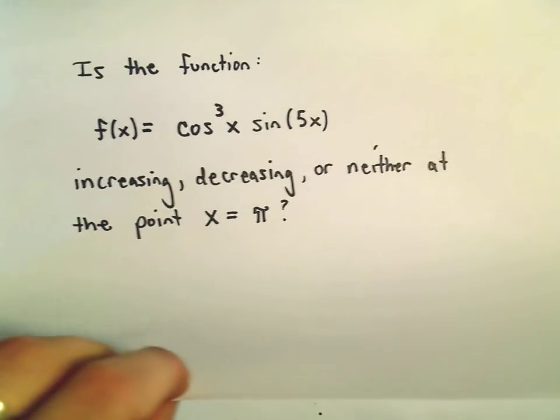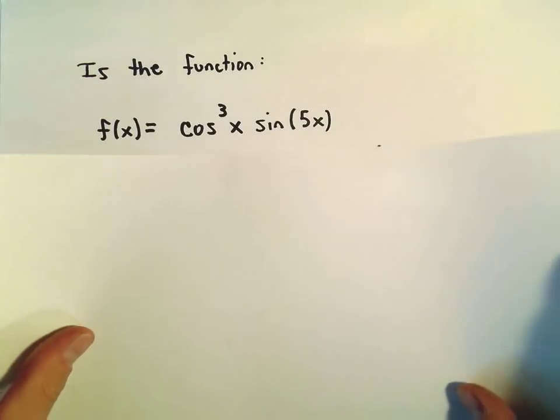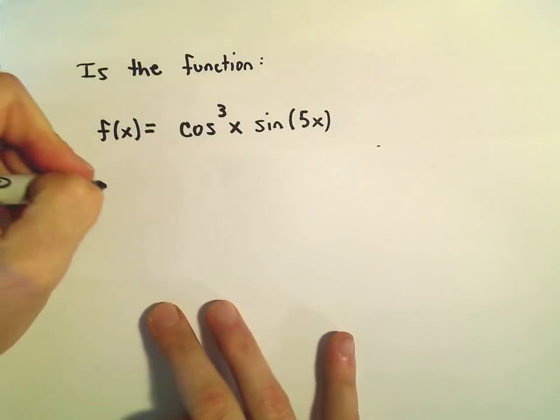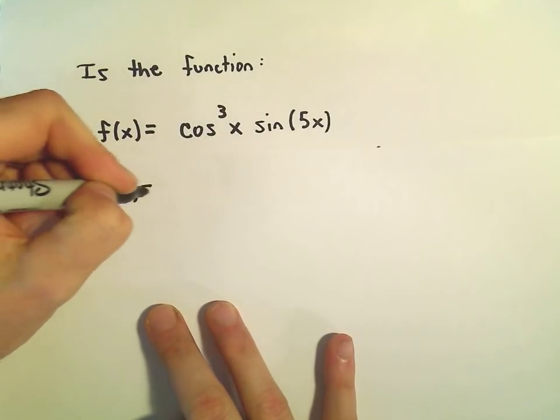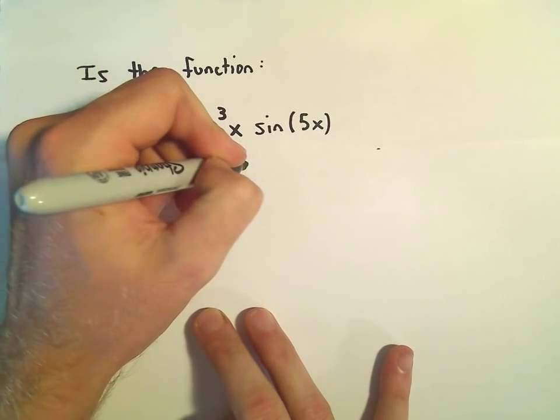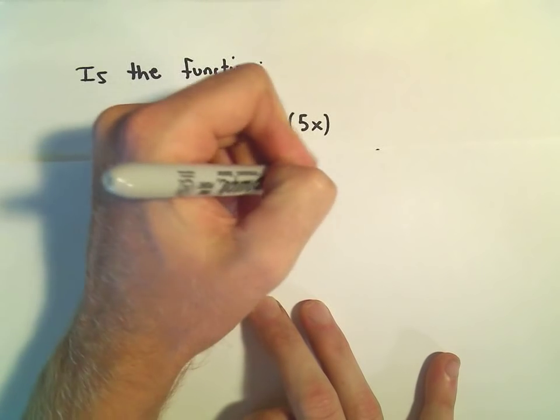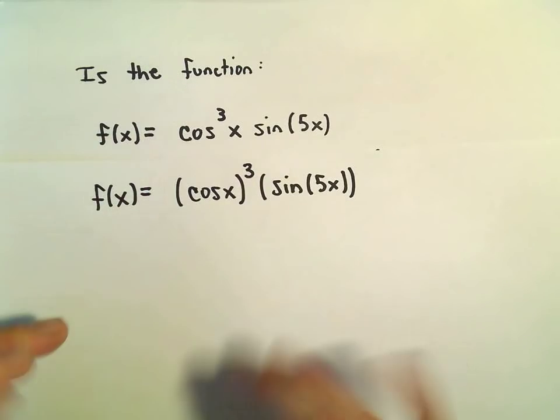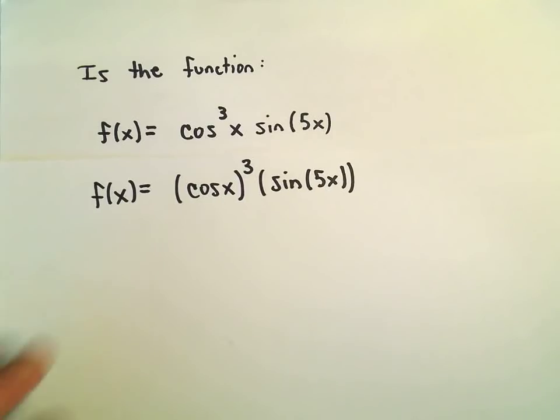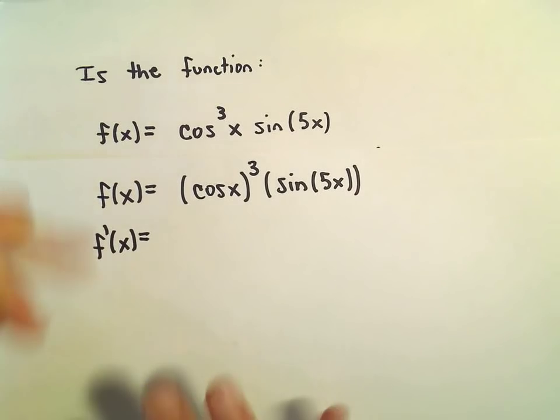All right, so let's just start taking our derivative. We have to be a little careful here. We're going to have to use the product rule and the chain rule. I'm going to rewrite this one time. So I'm just going to write this as cosine of x quantity cubed, and then we're multiplying that by sine of 5x. I like to just pull the exponent out just to remind myself again that I'm doing the chain rule.